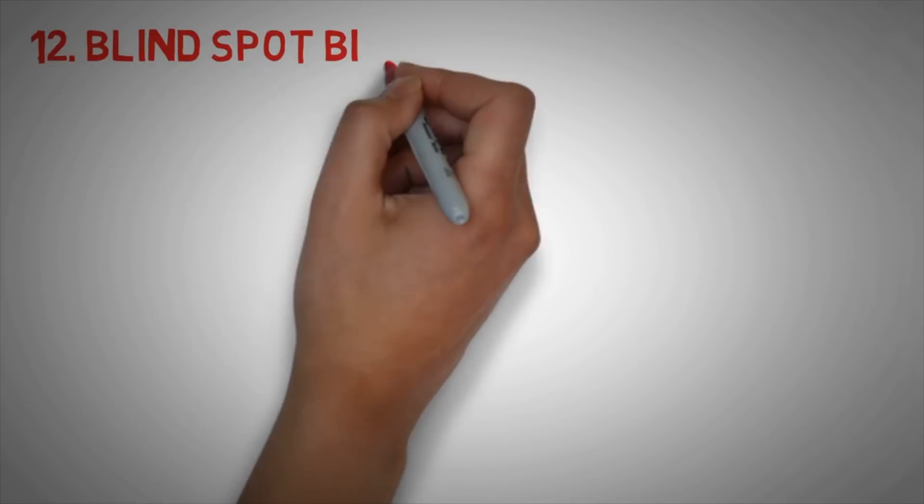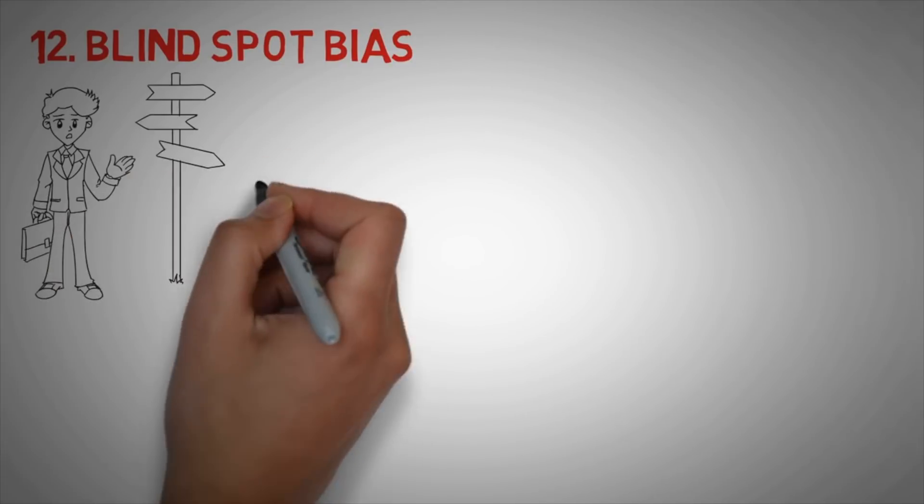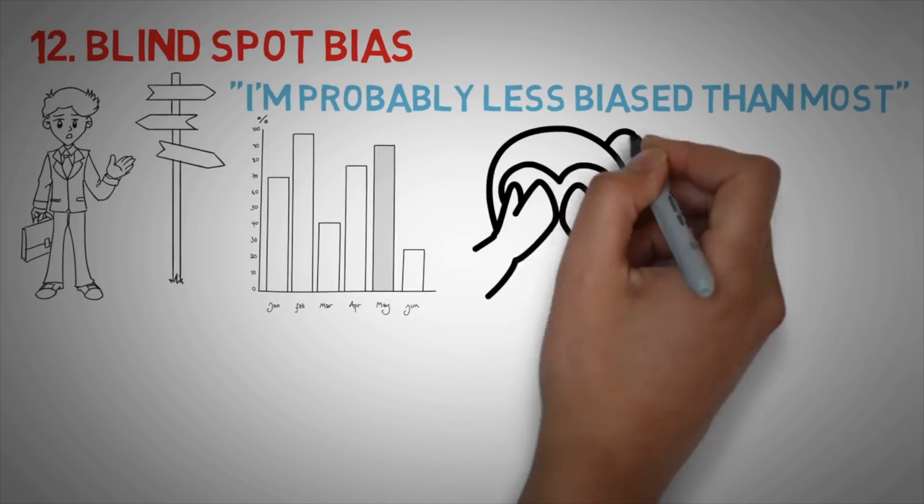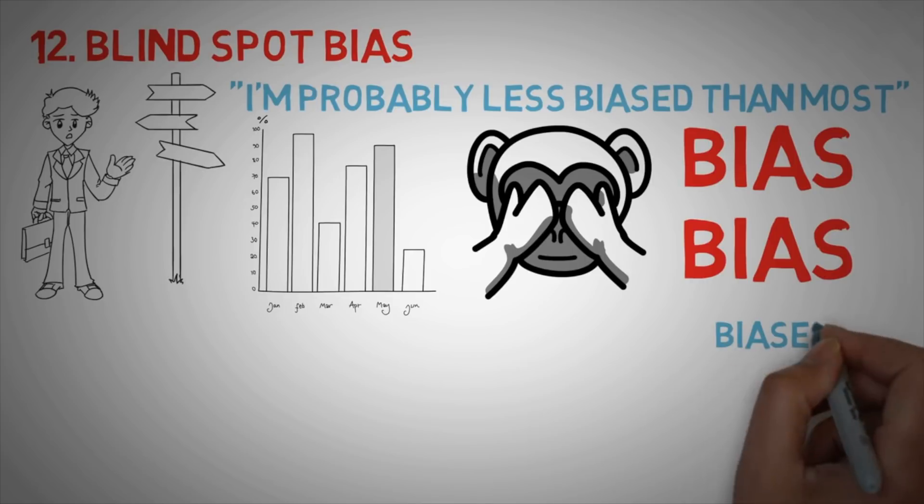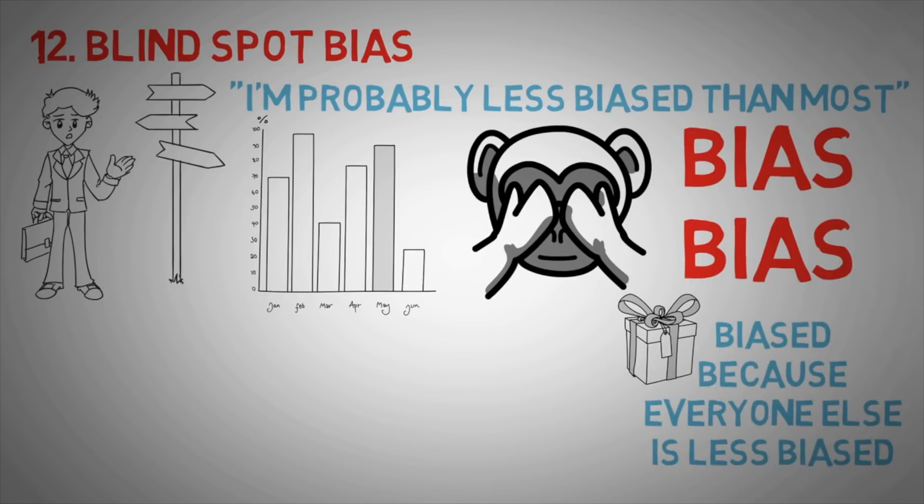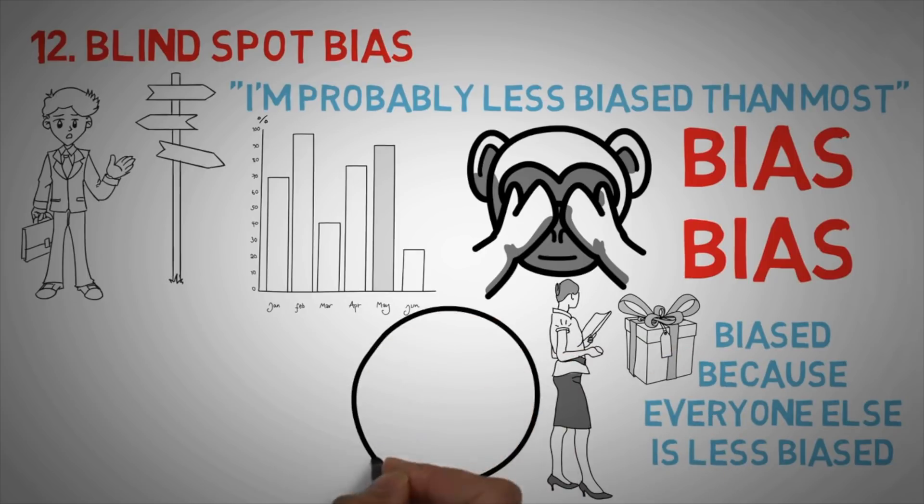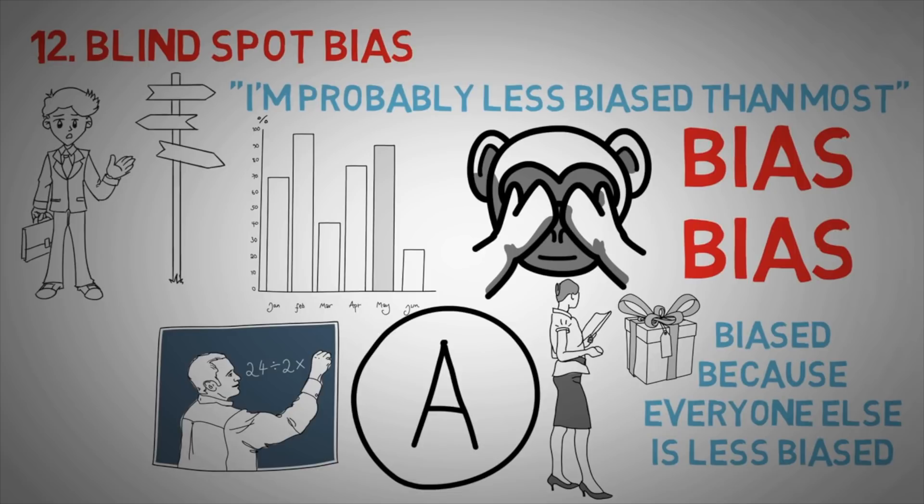The last one is called the blind spot bias. If I asked you how biased you are, you would probably say that you are less biased than the average person, and you are more likely to base your judgment on facts and statistics, and that's what's known as the blind spot bias, or the bias bias. You are biased because you think that you are less biased than everyone else. For example, I gifted something to my teacher and the next week she gave me a good grade on a test. If you ask her whether she was biased when she gave me that grade, the answer will be that the gift never affected her decision when marking my paper. But if you ask her if other teachers are biased when students give them gifts, she will say yes, in most cases. And that's what the blind spot bias is.